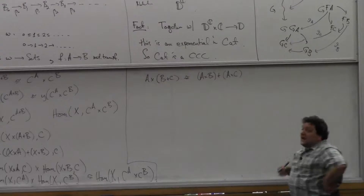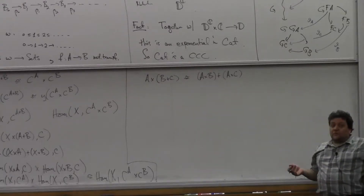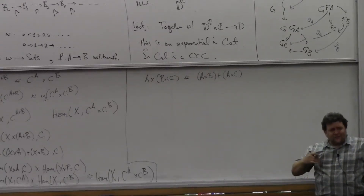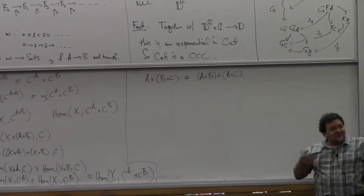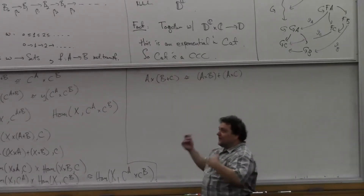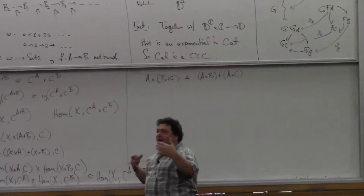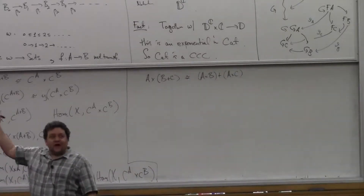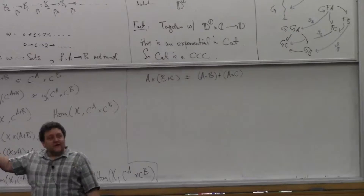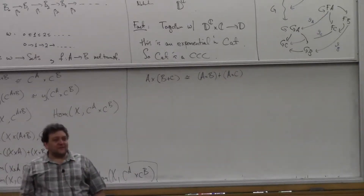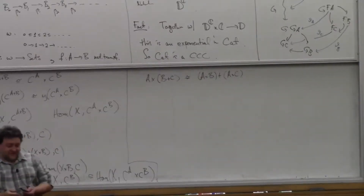In any Cartesian closed category with sums, products distribute over coproducts. It doesn't have anything to do with the exponents. We're looking at distributivity of products over sums: if we know that there are exponents around in the Cartesian closed category, it forces the products to be distributive over the sums. That's kind of funny.